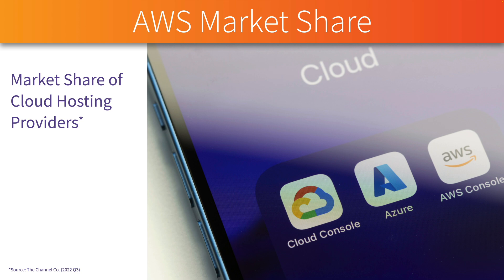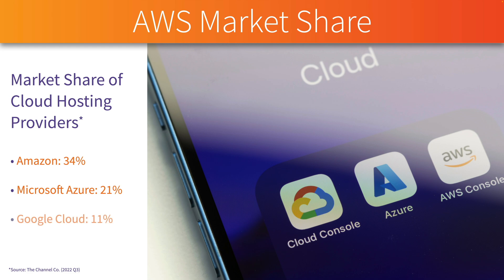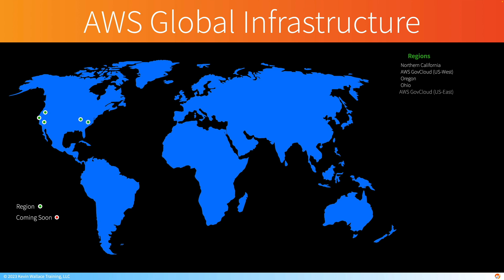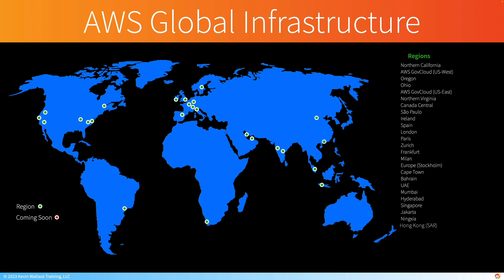Market share numbers are going to change over time, but as of Q3 2022, Amazon had over one third of the cloud hosting market at 34 percent, Microsoft Azure at 21 percent, and Google Cloud at 11 percent. AWS has data centers around the world divided into different regions. At the time of this recording, there are 30 regions worldwide, and AWS has identified five additional regions coming soon.